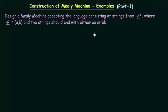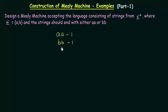So our task is to design a Mealy machine that should accept languages over {A, B} that ends with either AA or BB. In case of a Mealy machine, we know it should give outputs. So we design it such that whenever it sees the input AA or BB, it prints the output as 1. Whenever we see the output is 1, we realize that AA or BB is present.